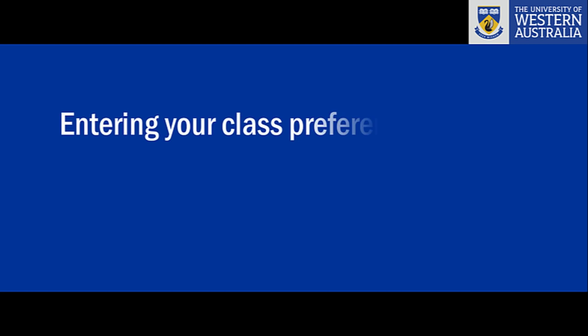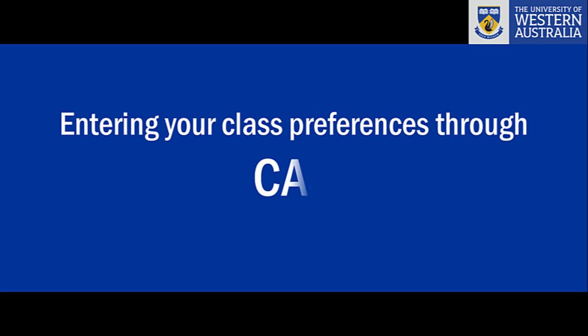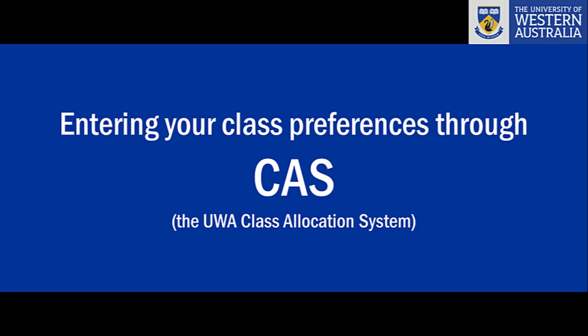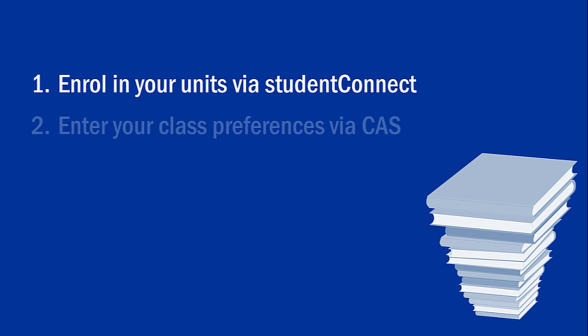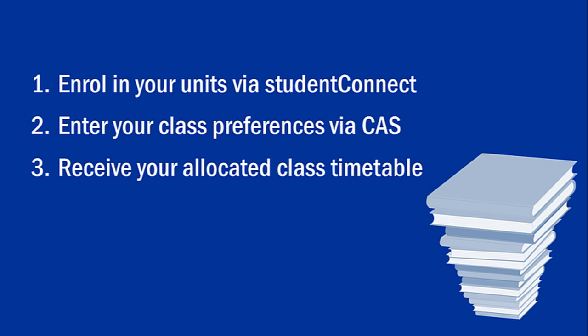Hi and welcome to UWA. This quick video will talk you through entering your class preferences on the Class Allocation System, or CAS. There are three main steps: first you'll need to be enrolled in your units, then you can enter your class preferences, and finally you'll receive your timetable for the next semester.